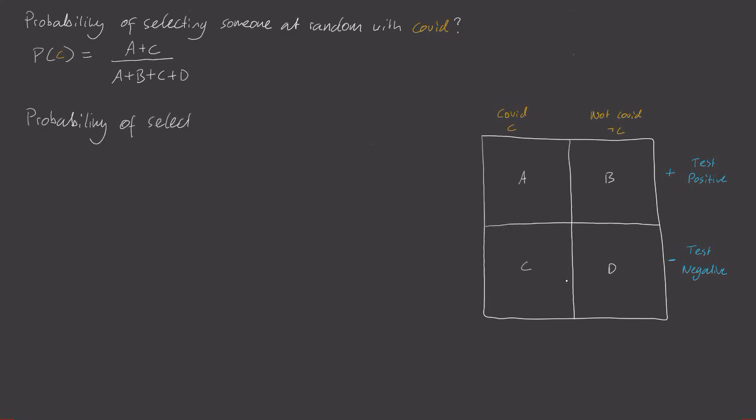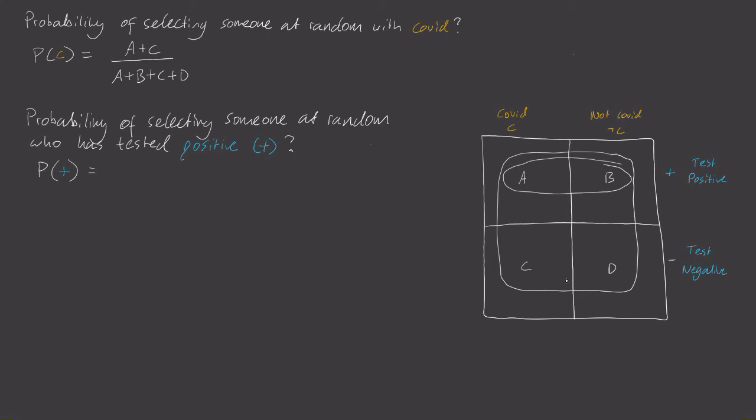Now what's the probability of selecting someone at random who is tested positive? Well, the total number of people tested positive is A plus B, so the total probability is A plus B divided by the total number of people in the city, A plus B plus C plus D.